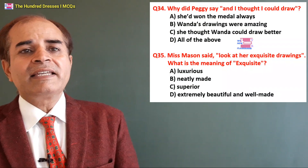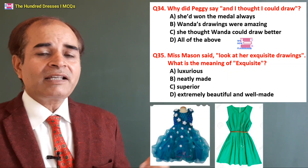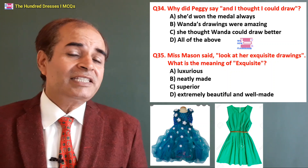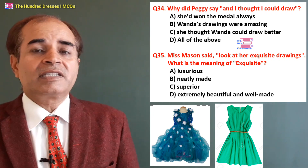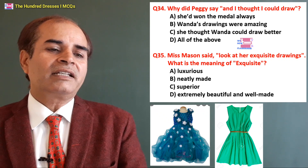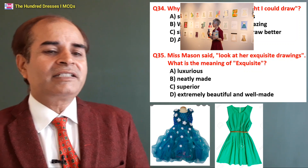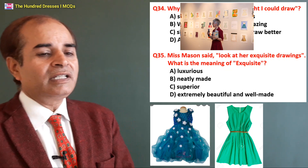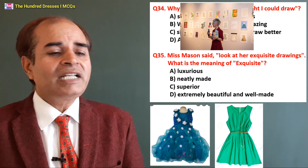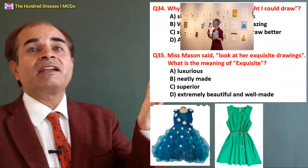Thirty-fourth question: Why did Peggy say 'and I thought I could draw'? She had won the medal always? Wenda's drawings were amazing? She thought Wenda could draw better? B is the right answer — when she saw the amazing drawings sketched by Wenda, she was impressed and acknowledged it. Thirty-fifth question: Miss Mason said 'look at her exquisite drawings.' What is the meaning of exquisite? Exquisite means extremely beautiful and well made. Not luxurious, not neatly made, not superior — A is the right answer.